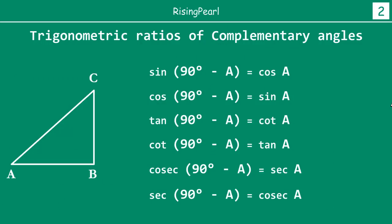We also saw earlier that trigonometric ratios of complementary angles in a right-angle triangle, where angle B is 90°, means angles A and C are complementary angles. So: sin(90° − A) = cos A, cos(90° − A) = sin A, tan(90° − A) = cot A, cot(90° − A) = tan A, cosec(90° − A) = sec A, and sec(90° − A) = cosec A. This is very important to remember.